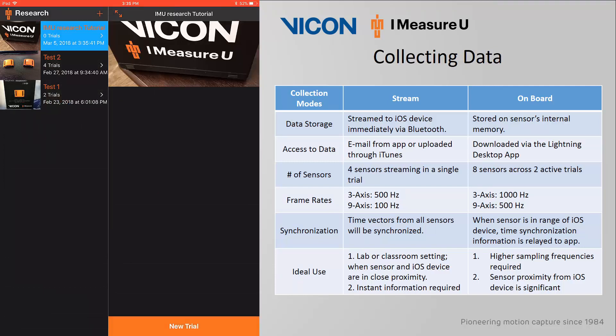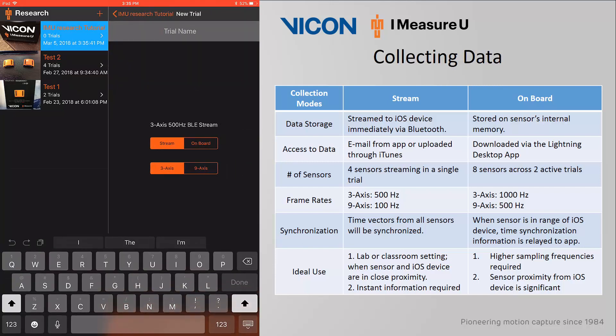Now highlight the session you want to use. Click New Trial at the bottom, and then at the top you will be prompted to enter a trial name — I will type in Trial 1. Below you will have two options for how you want to collect your data. I have summarized these options on the right to help you choose which mode is best suited for your application.